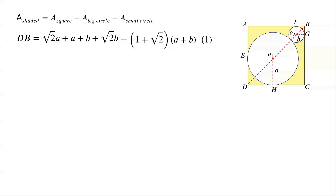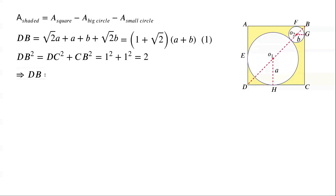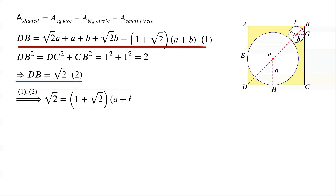As triangle BCD is a right-angled isosceles triangle, by the Pythagorean theorem, DB squared equals DC squared plus CB squared, which equals 1 squared plus 1 squared, which is 2. So DB equals root 2. From these two expressions, we have root 2 equals (1 plus root 2) times (A plus B). So A plus B equals root 2 over (1 plus root 2).